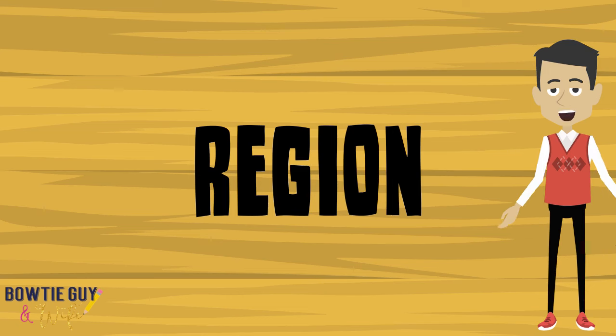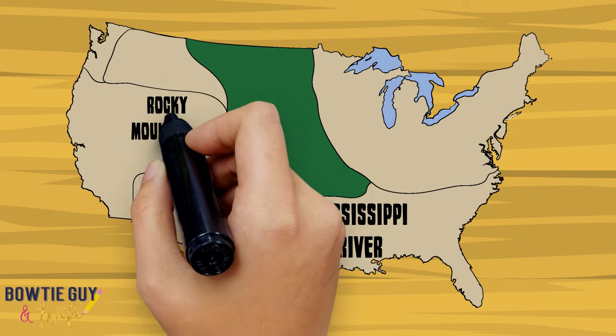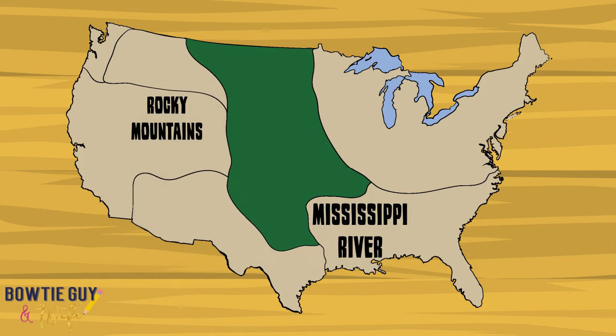What region of North America did Plains Indians live? Plains Indians lived in an area known as the Great Plains — a vast, large, flat area that is west of the Mississippi and east of the Rocky Mountains.